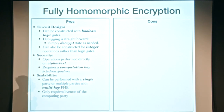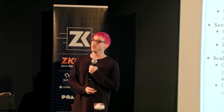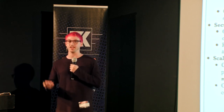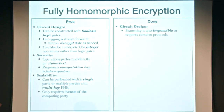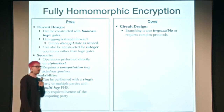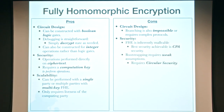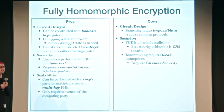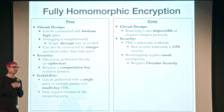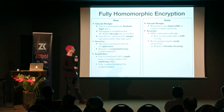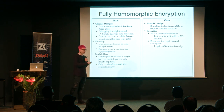For scalability, FHE can be performed with a single party or multiple parties with multi-key FHE, and it only requires the liveness of the computing parties. You can send data to that person, they compute it, and send it back — beyond just sending the data, there isn't necessarily any interaction required between the two. However, branching is also impossible or requires really complex protocols at the current moment. A big problem with FHE is that since homomorphic encryption is inherently malleable, the best security achievable is CPA — chosen plaintext attack — security.